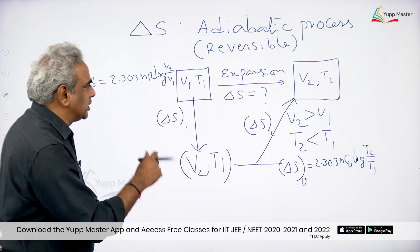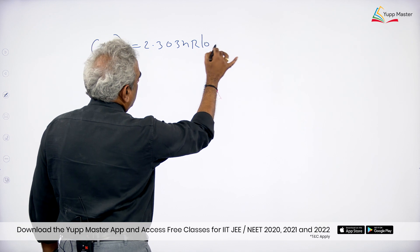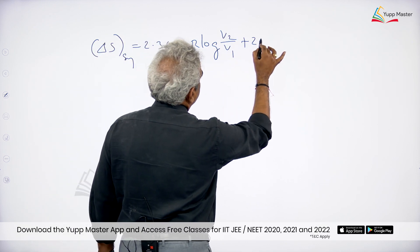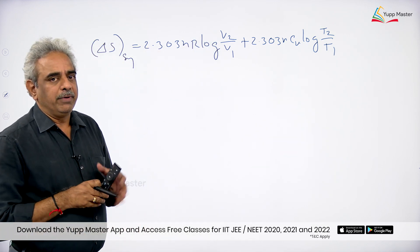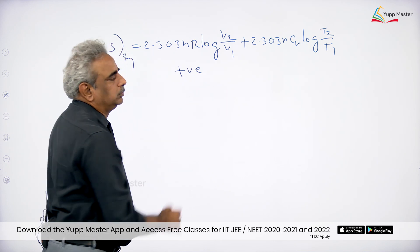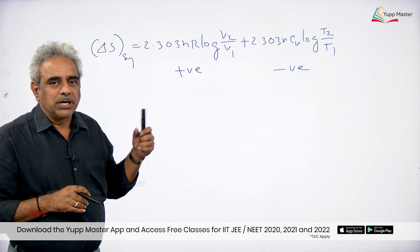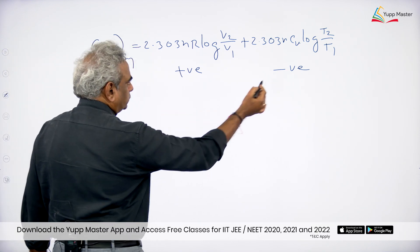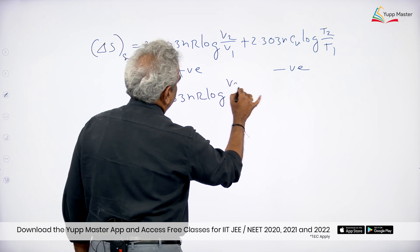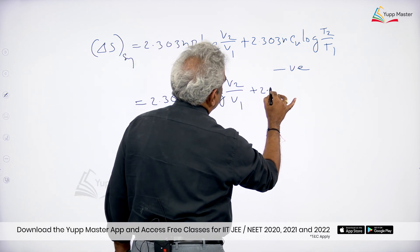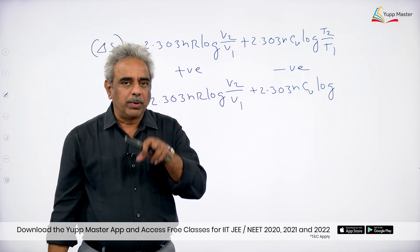Adding these up, the overall entropy change of the system is: ΔS_system = 2.303·nR·log(V2/V1) + 2.303·nCv·log(T2/T1). Since V2 > V1 the first term is positive, and since T2 < T1 the second term is negative. We know T1/T2 = (V2/V1)^(γ−1), so we can replace T2/T1 accordingly.